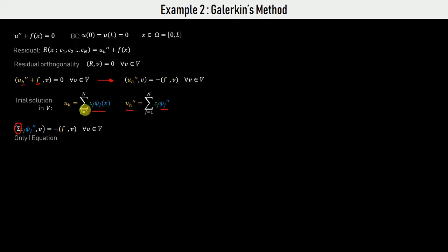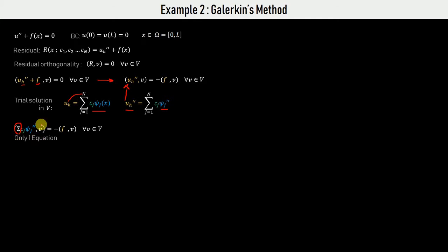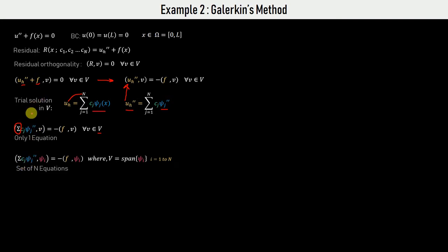Note that throughout this video, wherever you see this summation, it is summed over all J's from 1 to n. We put UH and UH dash into the equation and write it as one statement. We then convert it into an i-statement by imposing the condition that the result should be orthogonal to all the basis functions spanning space V — so we replace psi_V with psi_i in both places.